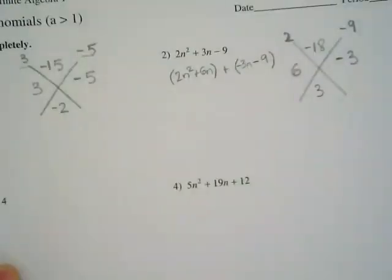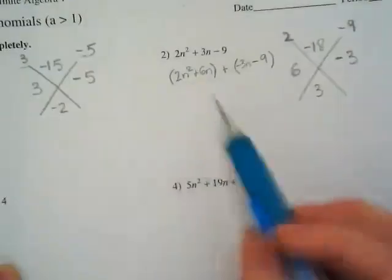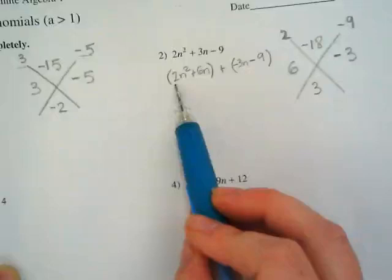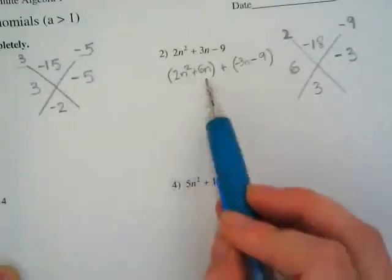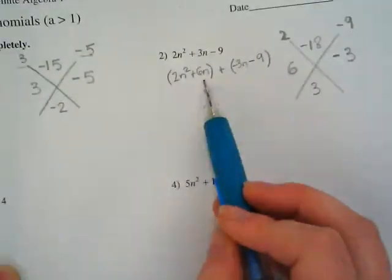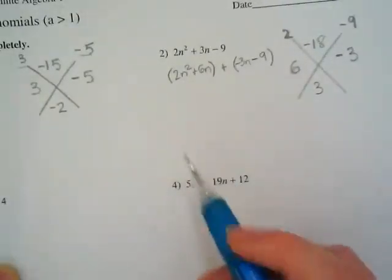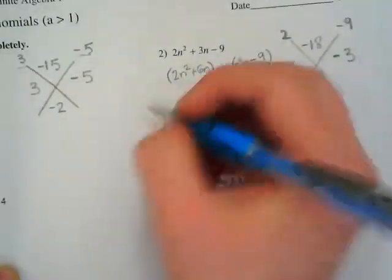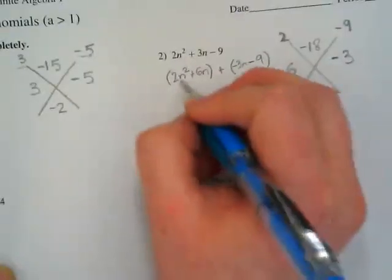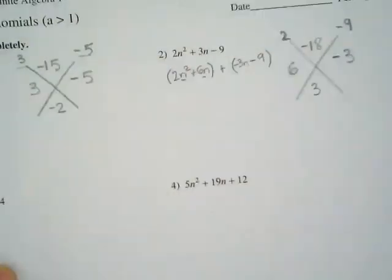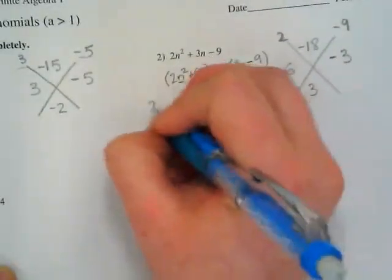They're lined up, so I know that I have a common factor. My greatest common factor between 2n squared and 6n is 2n. They both have an n term, so I'm going to factor out 2n.